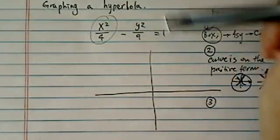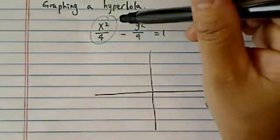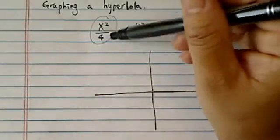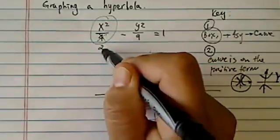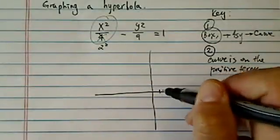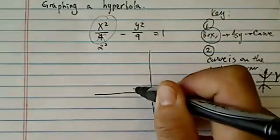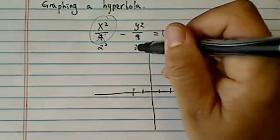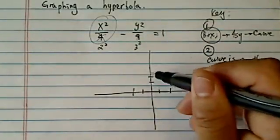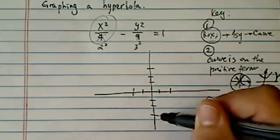Third thing is, so here is 2 squared. That's on my x-axis, so I'm going to mark 2 units. This one, I'm going to rewrite it as 3 squared, so that's on the y-axis.